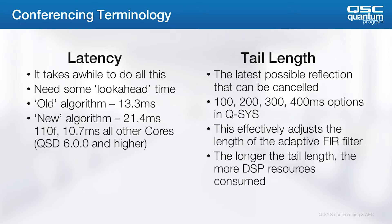A larger room will usually have reflections that return to the microphone later than a small one. The tail length of the AEC algorithm determines how long it looks for reflections to be cancelled. The Q-SYS AEC algorithm has adjustable tail lengths of 100, 200, 300, and 400 milliseconds. The number of AEC algorithms a given core will support is specified for the 200 millisecond tail length. 300 and 400 millisecond algorithms require more processing resources, so fewer microphones can be processed.